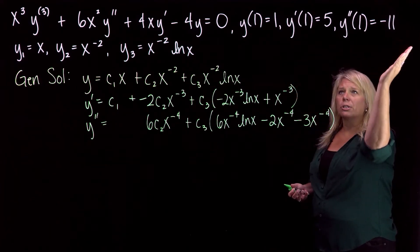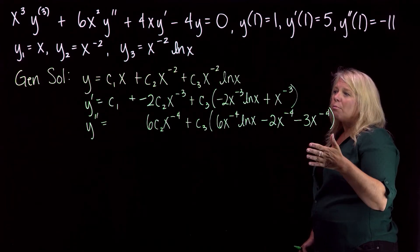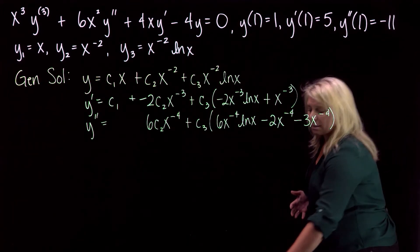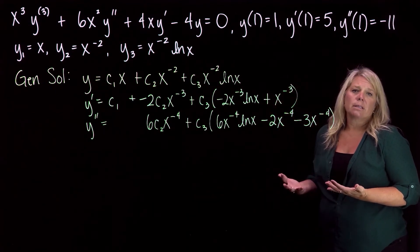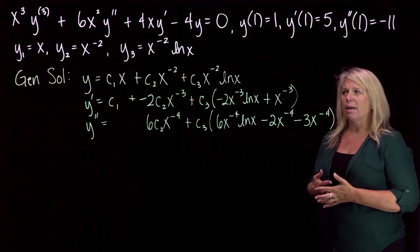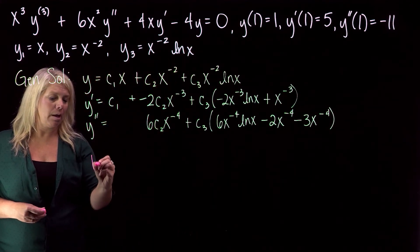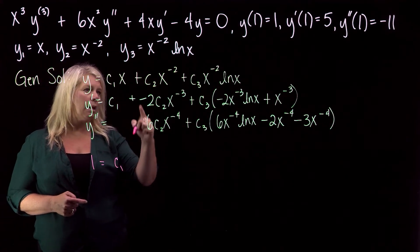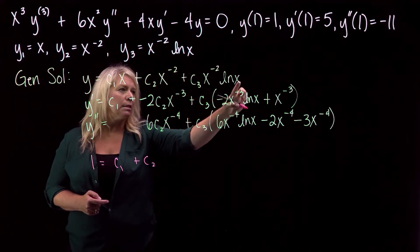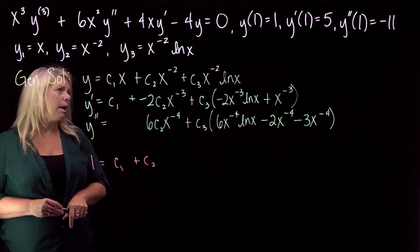Now we plug in the initial conditions, all given at x equals one. For the first equation, y equals one: we get 1 equals c1 plus c2, since x to the negative 2 evaluated at 1 is 1, and ln of 1 is zero so the last term vanishes. For y prime equals five: we get 5 equals c1 minus 2c2, and since ln of 1 is zero that part vanishes, leaving plus c3.